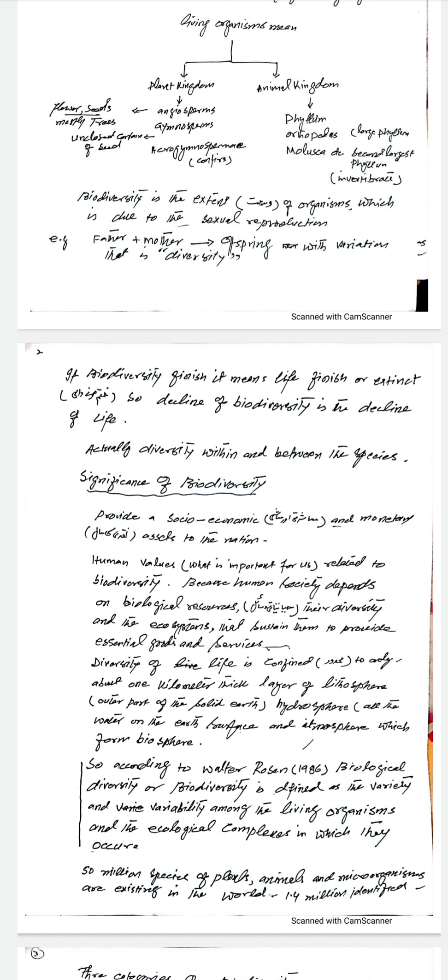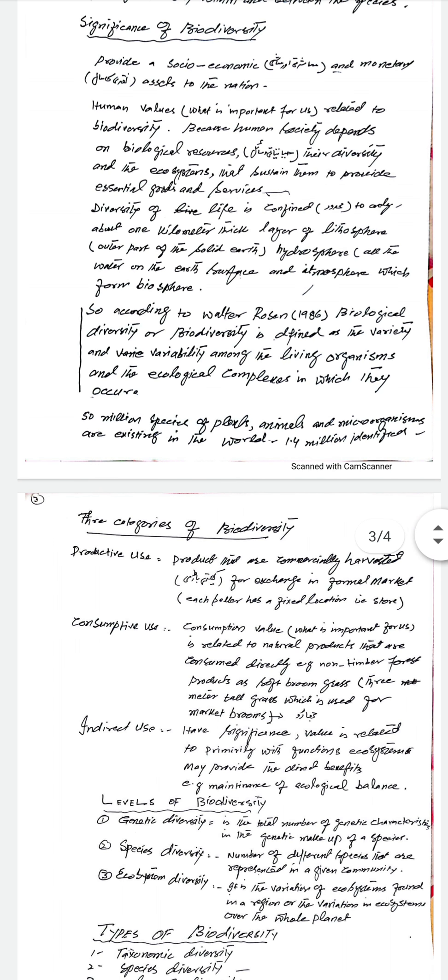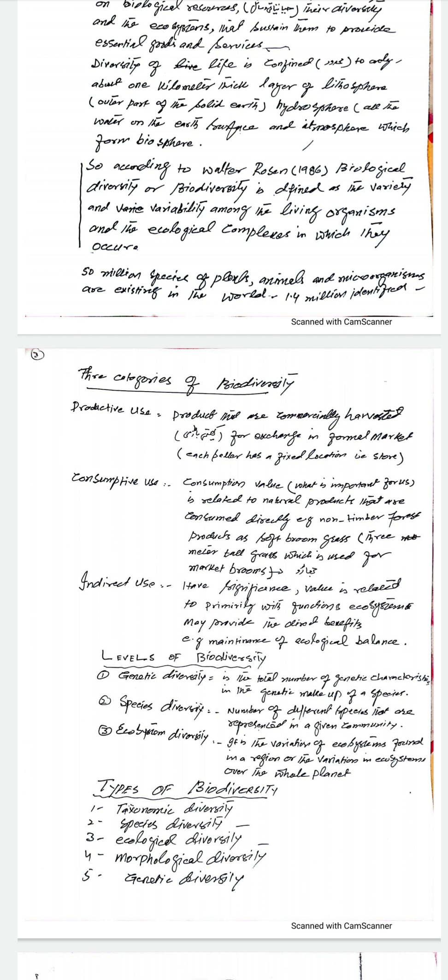Next are the three categories of biodiversity. Number one is productive use — biodiversity that is used for human life and benefits us. The first category is productive use: things that are commercially harvested, like agriculture, livestock farming, and poultry. These are harvested for commercial exchange in formal markets, where each seller has a fixed location such as a store.